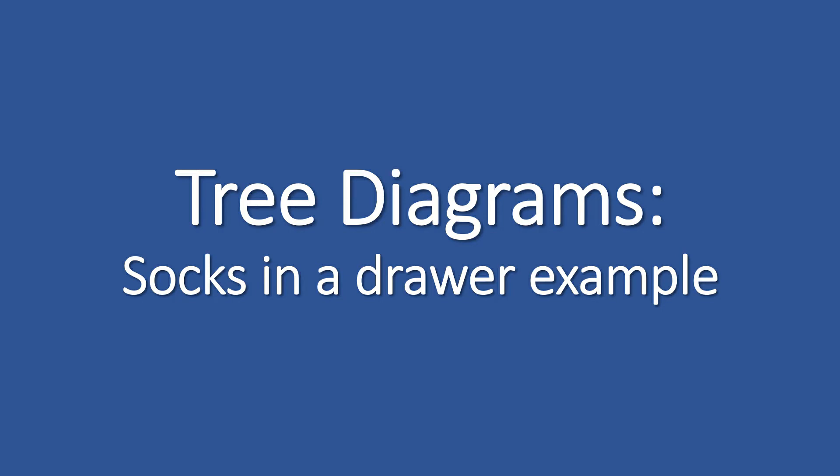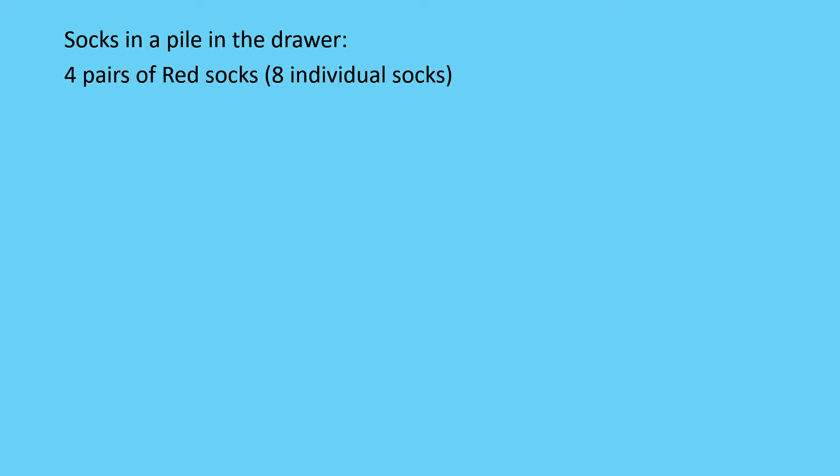Alright, let's take a look at our example now, where we are dealing with the red and blue socks, all of them mixed up in a pile. If we take note of what we've been told, since we have four pairs of red socks and three pairs of blue socks, we're going to have eight individual red socks and six individual blue socks.